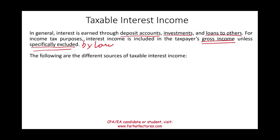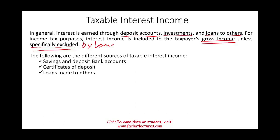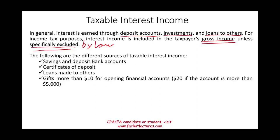The most common sources of taxable interest income are savings and deposit accounts, CDs (certificates of deposit), and loans made to others. Also included are gifts of more than ten dollars for opening financial accounts. For example, if a bank gives you a gift for opening an account, that gift is considered interest income — because you are depositing money, meaning you are lending money to the bank. The threshold is twenty dollars if the account is more than five thousand dollars.